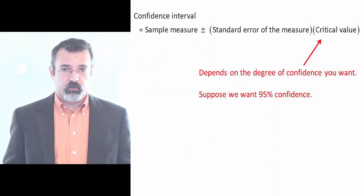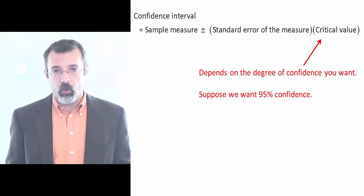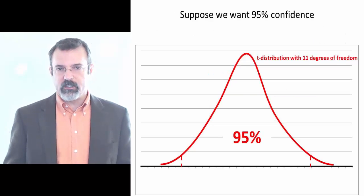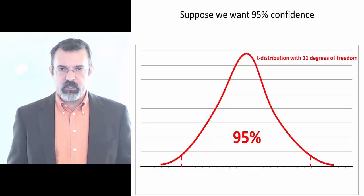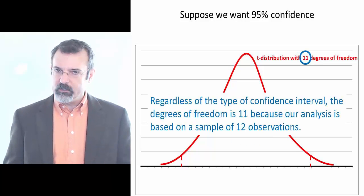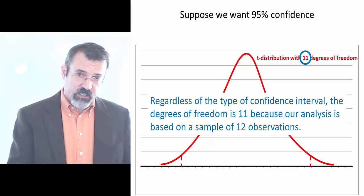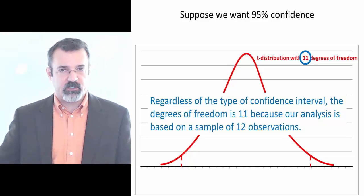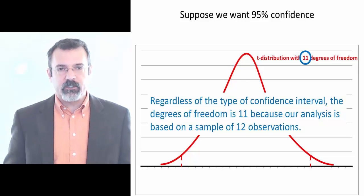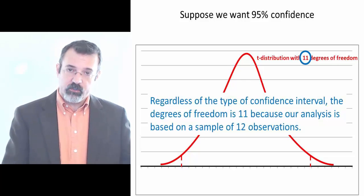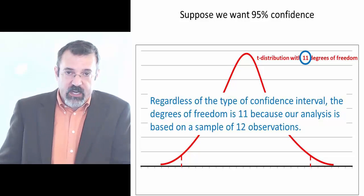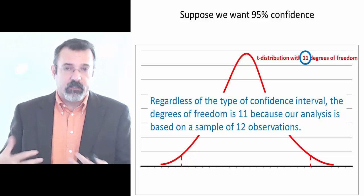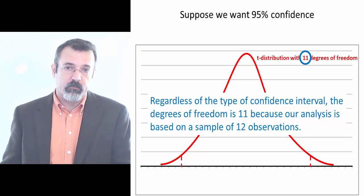The critical value depends on the degree of confidence we want. Suppose we want 95% confidence, and we look at a t-distribution with 11 degrees of freedom. We use 11 degrees of freedom regardless of whether we're building a confidence interval for a single gas station or for the average of a bunch of gas stations. The reason is that everything we're going to do is based on our sample of 12 observations. We have 12 observations, therefore our degrees of freedom are 12 minus 1, or 11.